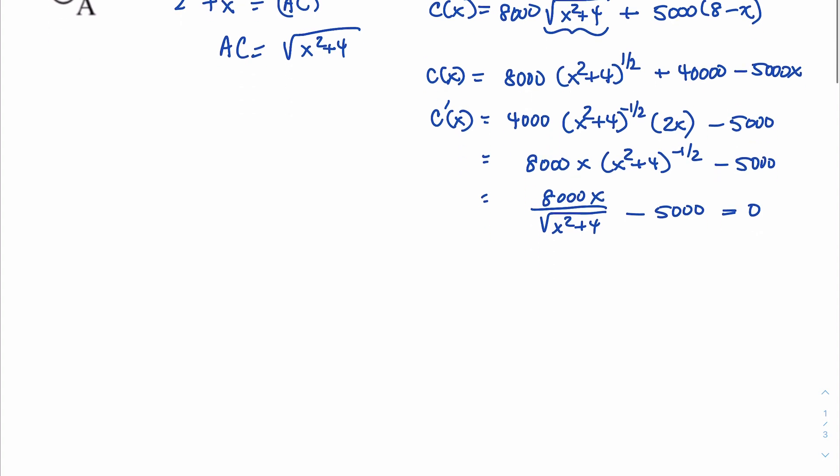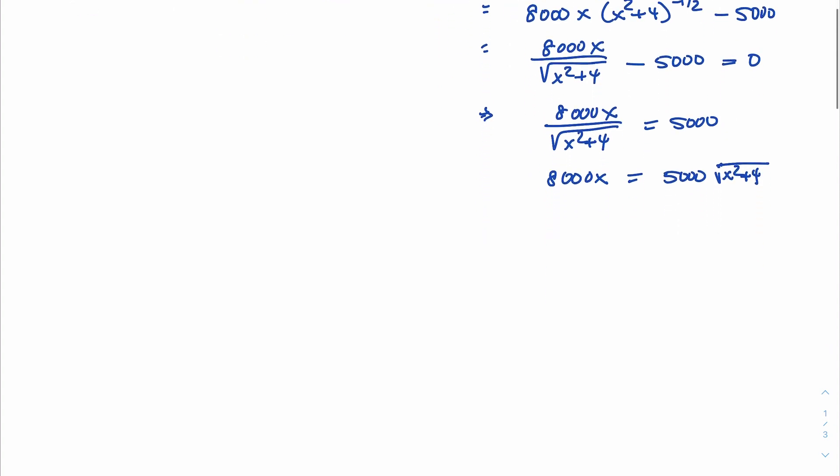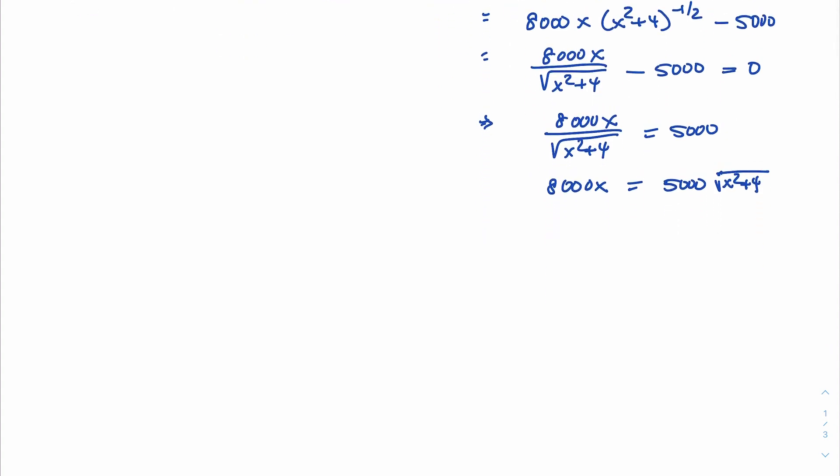So what we'll do, we'll isolate the x terms to one side. So I'm going to add 5,000 to both sides. So you have 8,000x over the square root equals 5,000. And I'm going to go ahead and multiply both sides by the square root. So that means we have 8,000x equals 5,000 square root of x squared plus 4. And right away, I notice both sides have a common factor of 1,000. So I'm going to divide both sides by 1,000 right away. That's going to go a long way in making our computations much easier. So you have 8x equals 5 square root of x squared plus 4.